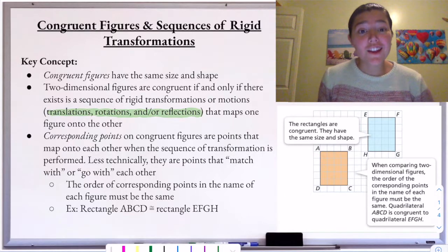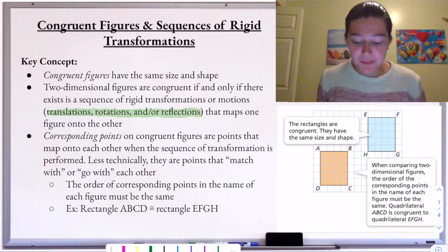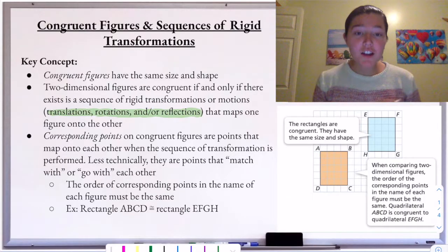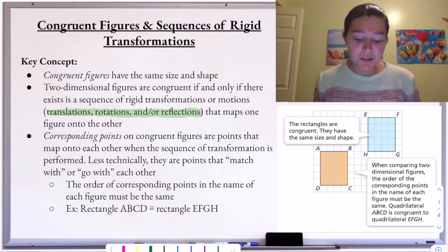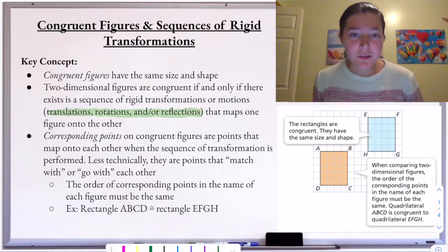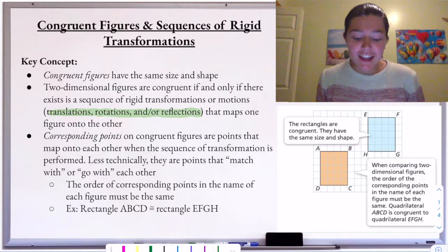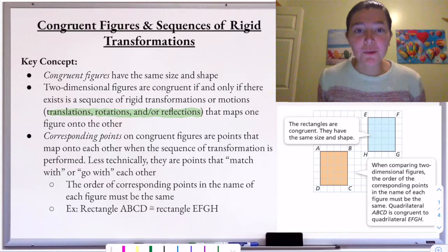But if a mapping does not exist, then we can say for sure those are not congruent shapes. Corresponding points on congruent figures are points that map onto each other when a sequence of transformations is performed. Less technically, they are points that match up or go with each other.